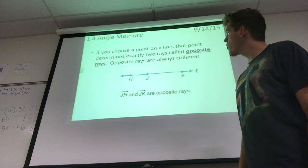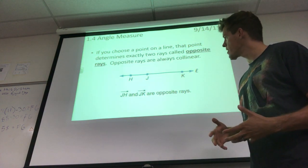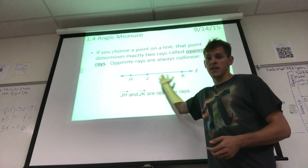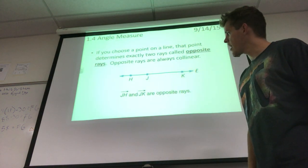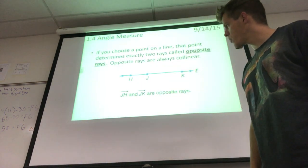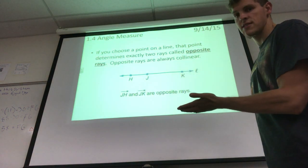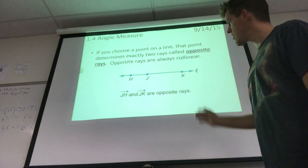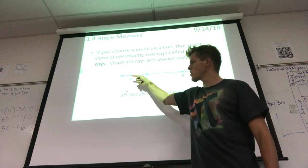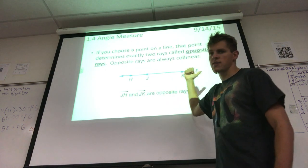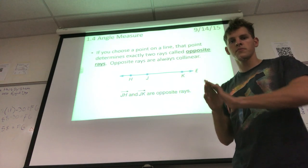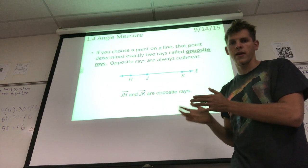If you choose a point on a line, that point determines exactly two rays called opposite rays. Opposite rays are always collinear. In this example, their starting point is J. The correct way to name a ray is where it starts and the direction it goes in, versus just left to right, right to left.